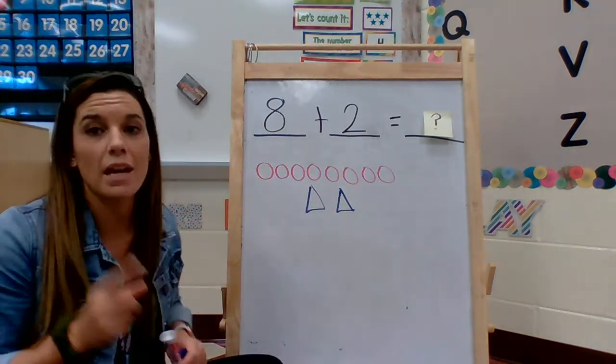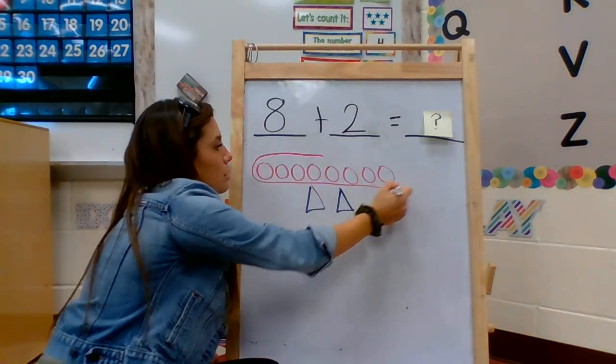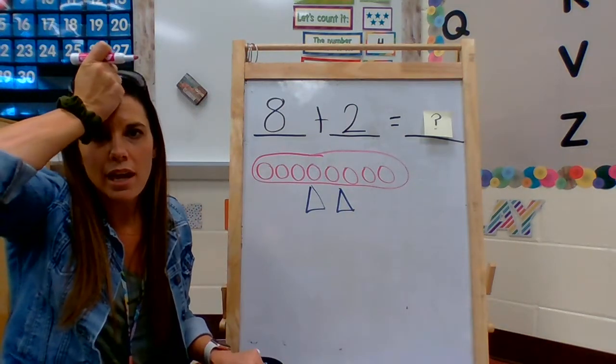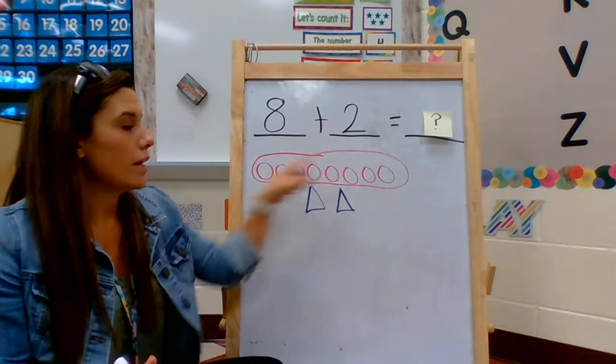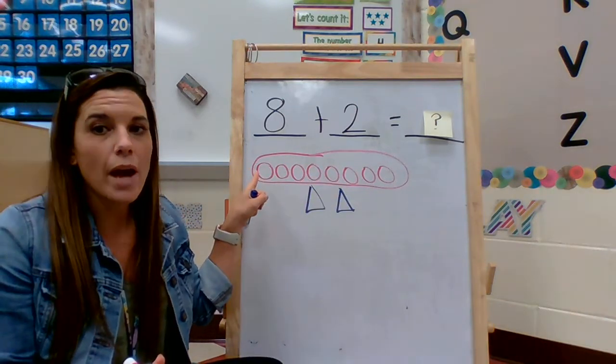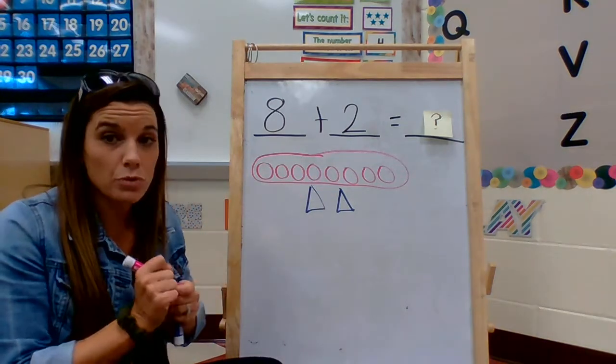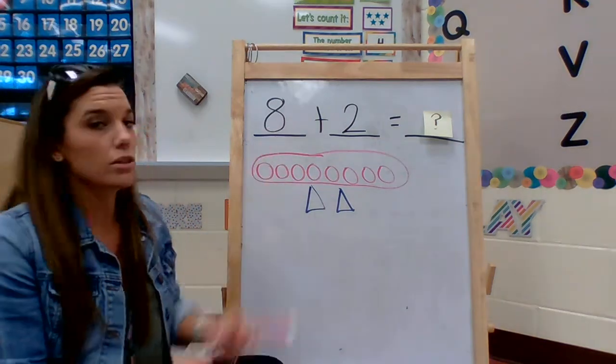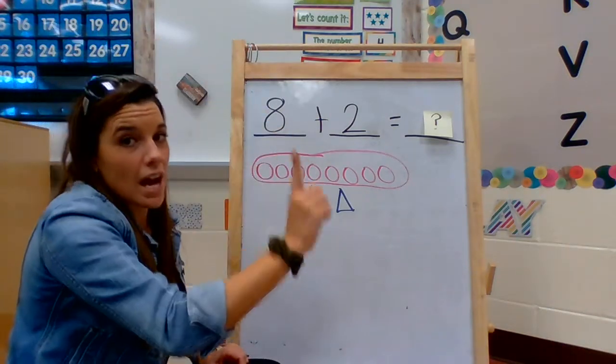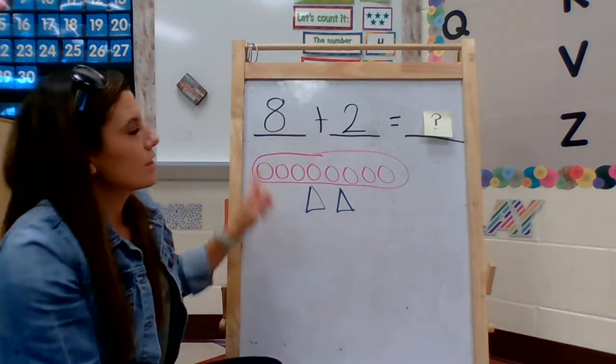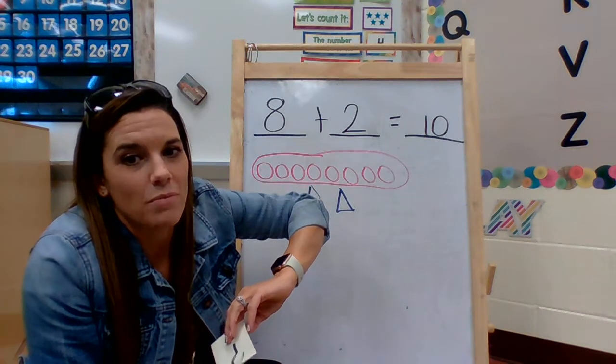I'm going to make that point again. So, to make this easier, we're going to put the bigger number in our heads, and then we're going to count on from there. We drew 8 pink circles. So, I don't have to count every single circle, because in my mind, I know that I drew 8 pink circles. So, I'm going to put the bigger number in my head. 8, 9, 10. So, let's see if we got that right. We did.